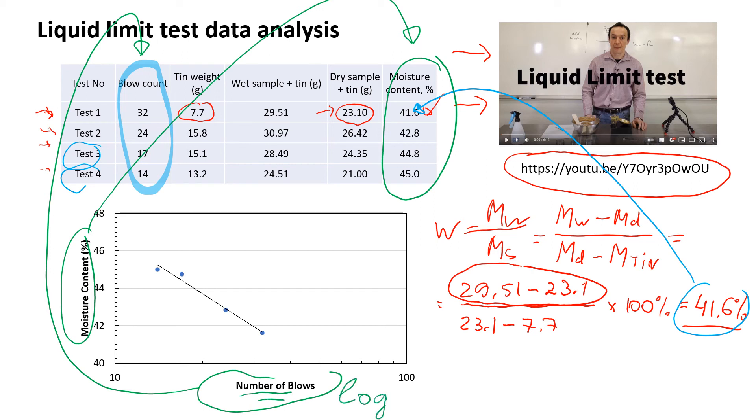What I would recommend is maybe use Excel. Plot your data in Excel and then there is an option in Excel where you can change the axis from arithmetic to log scale. That will be the easiest. Now we have results from four tests, so these are four tests.